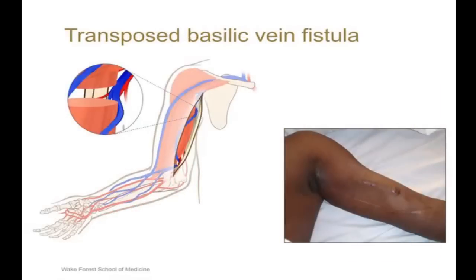The basilic vein is the deep vein in the upper arm, located between the two heads of the biceps muscle. The vein is transposed into a superficial tunnel for easy cannulation during dialysis. The schematic diagram shows the long scar extending from the axilla to the elbow, an end-to-side anastomosis between the transposed basilic vein and the brachial artery, and the magnified insert shows the swing site — the point where the basilic vein is mobilized from its deeper tissues to the superficial tunnel.